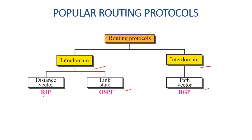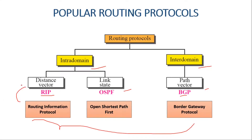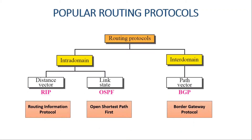For distance vector we have RIP, which is also known as Routing Information Protocol. For link state we have OSPF, which is Open Shortest Path First protocol. For path vector we have BGP, known as Border Gateway Protocol. All of these are based on the distance vector, link state, and path vector protocols.